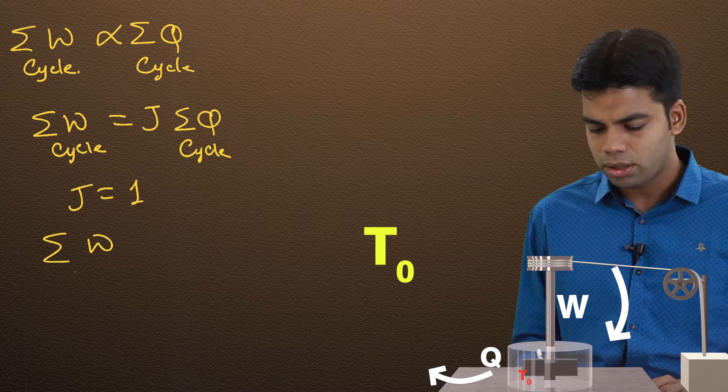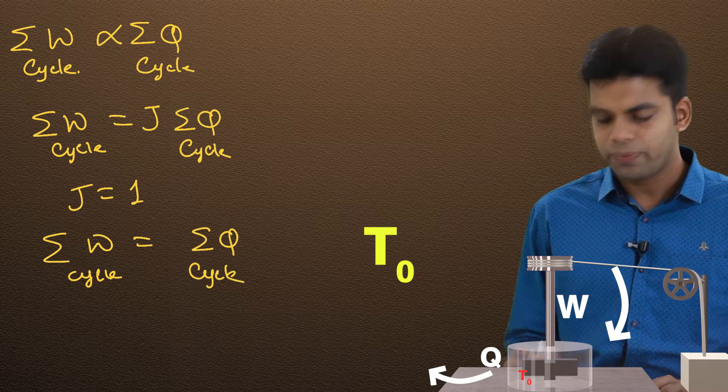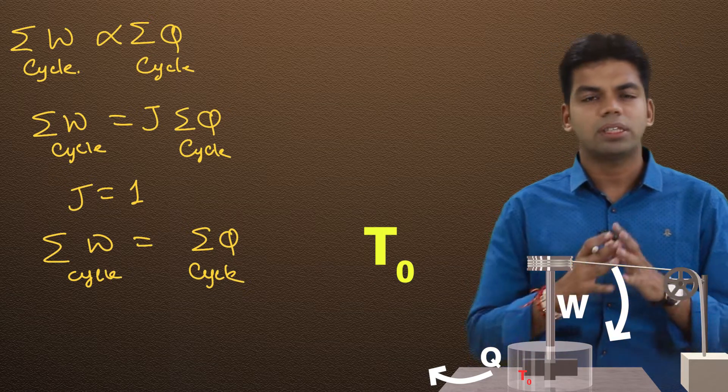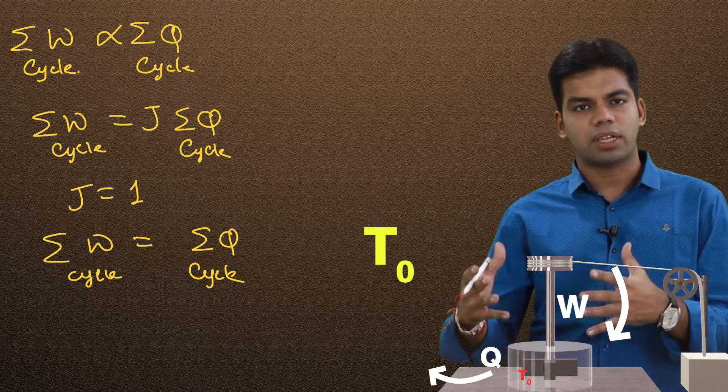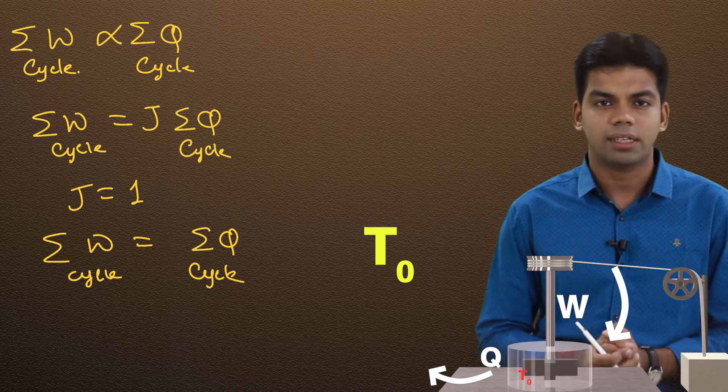And finally we got that summation of W cycle was equal to summation of Q cycle. That means cyclic integral of W in a complete cycle, summation of algebraic sum of work done in a complete cycle is equal to algebraic sum of heat in a complete cycle.